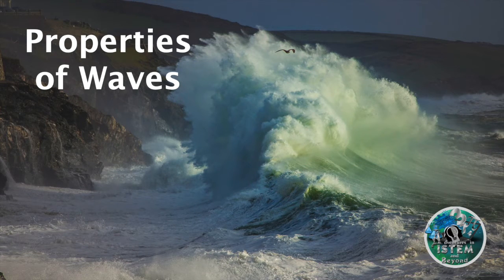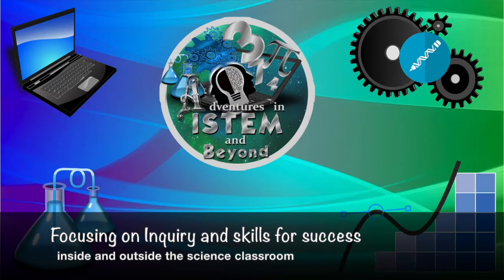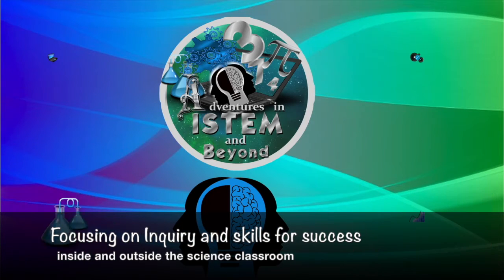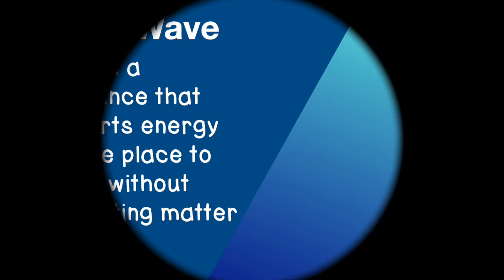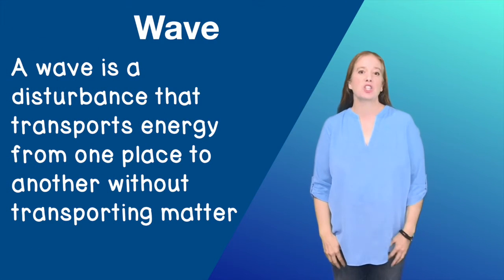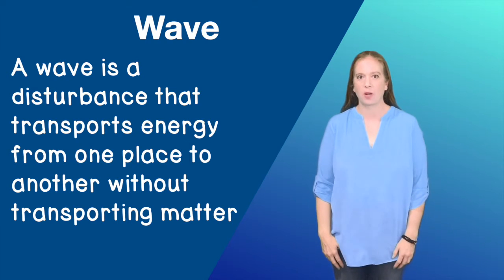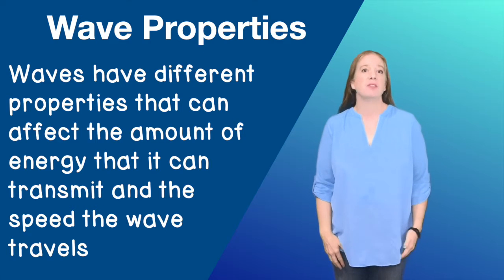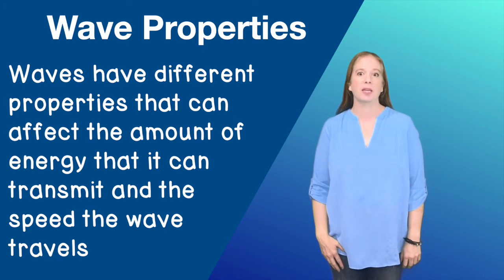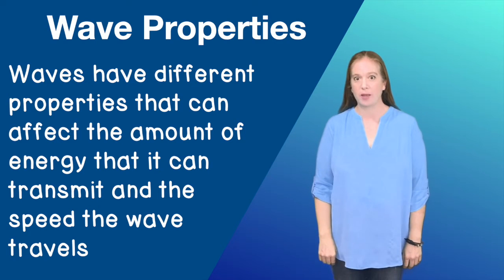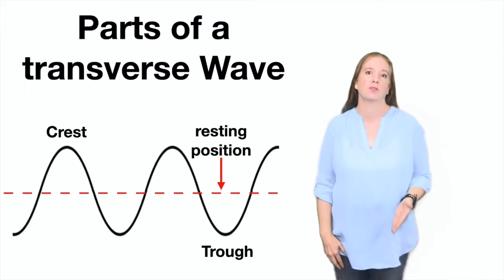Properties of Waves. A wave is a disturbance that transports energy from one place to another without transporting matter. Waves have different properties that can affect the amount of energy that it can transmit and the speed the wave will travel. To understand the properties that waves have, we need to go over the parts of a wave.